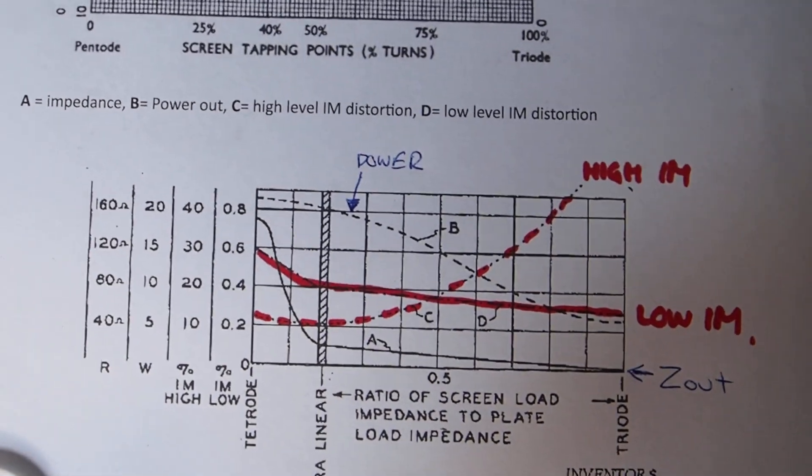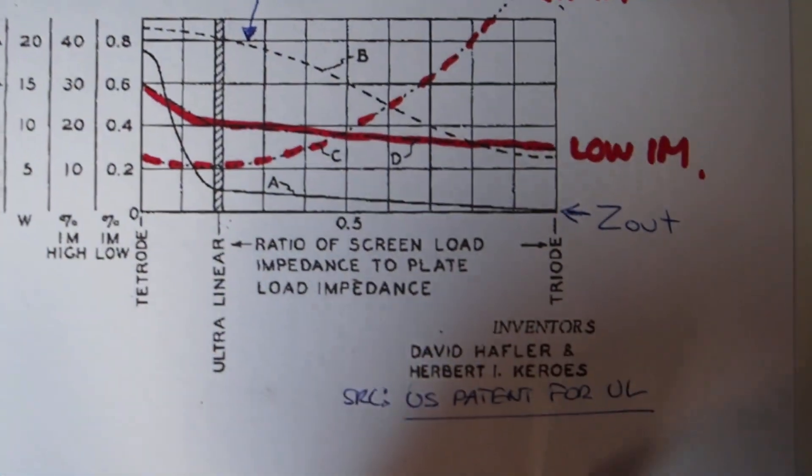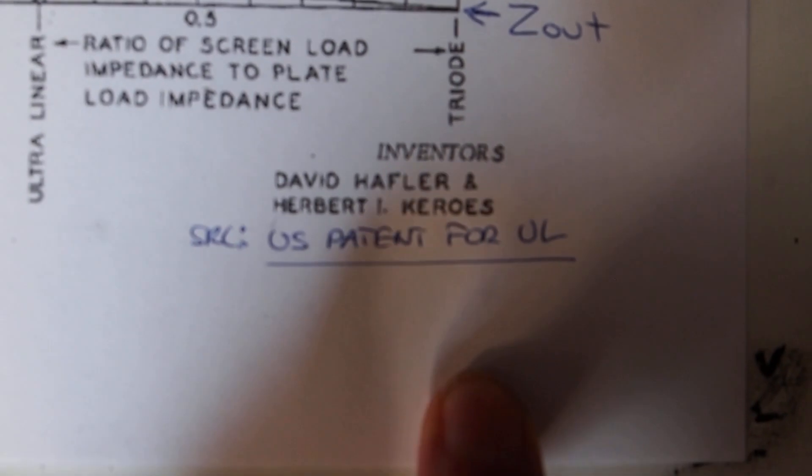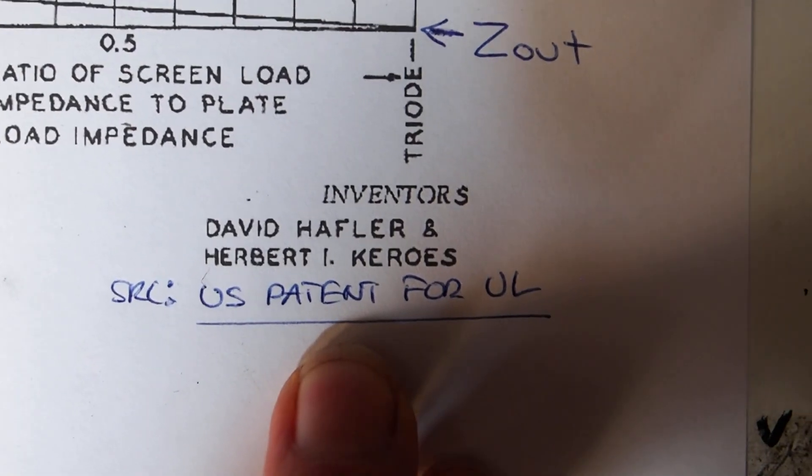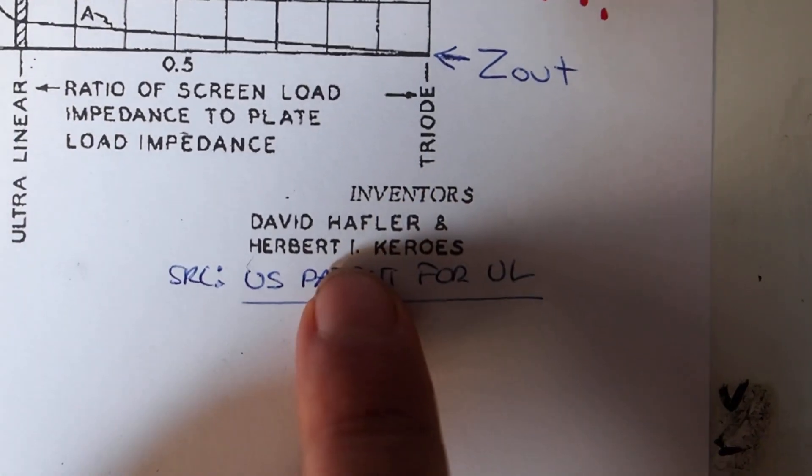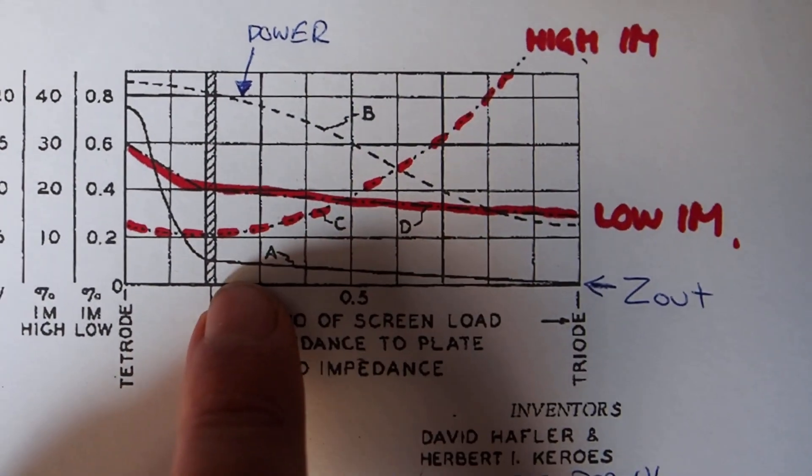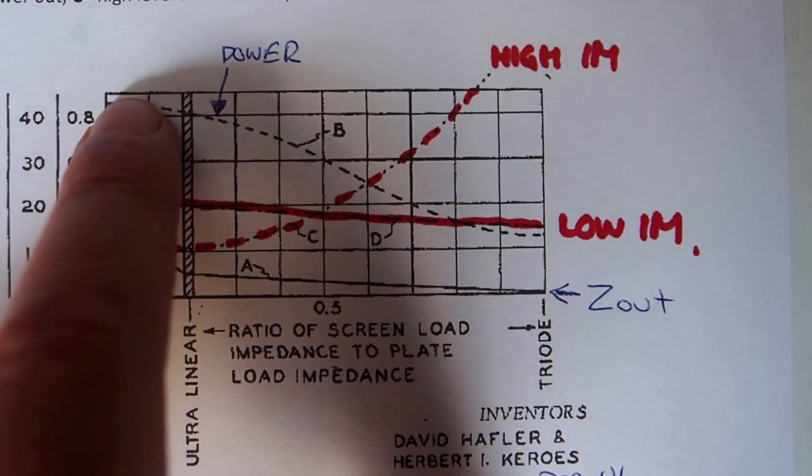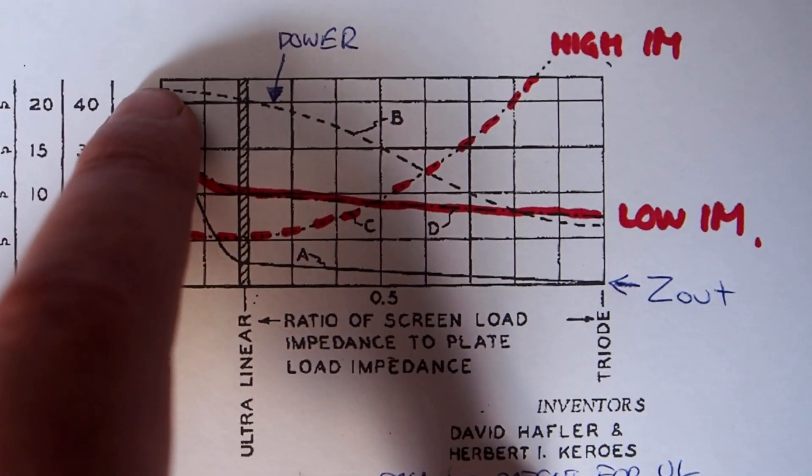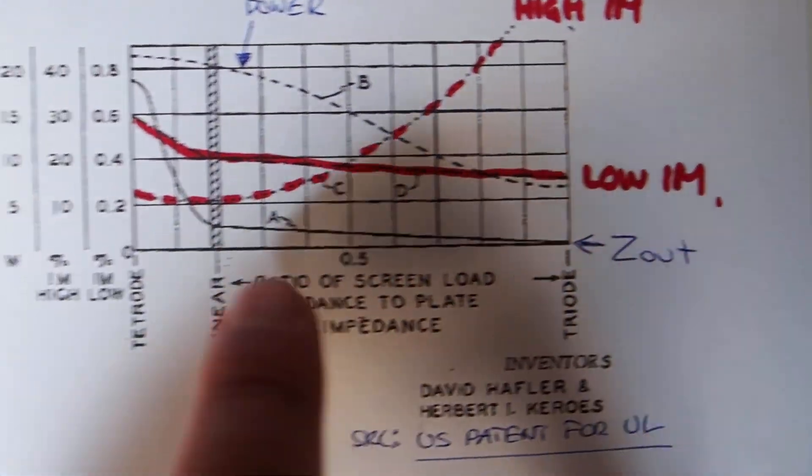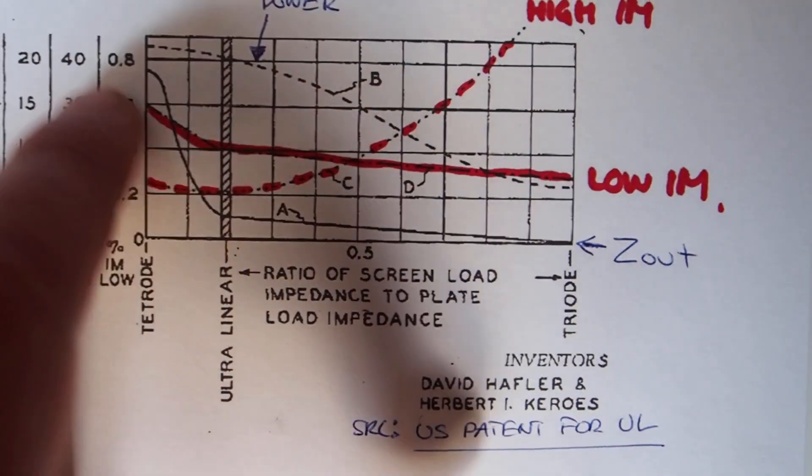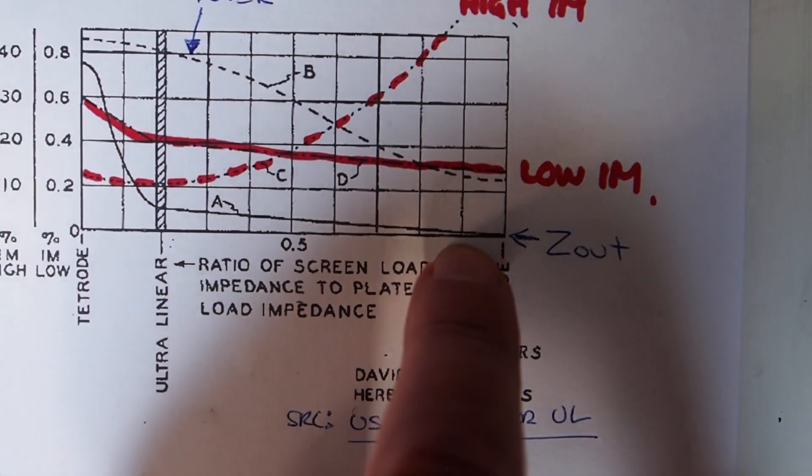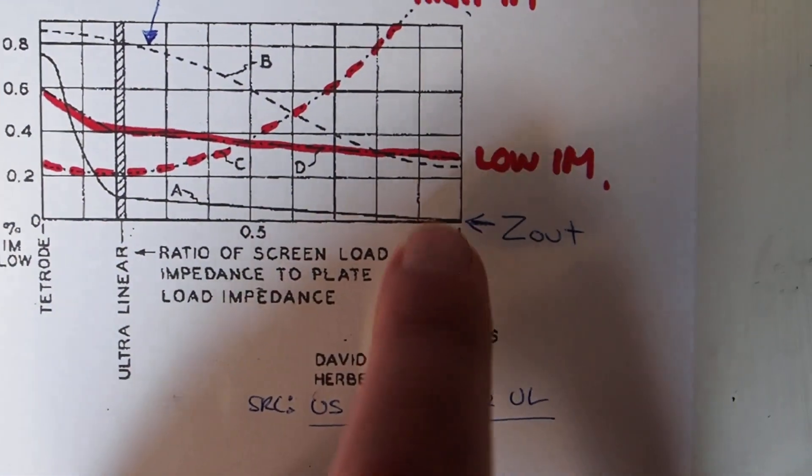But wait, there is more. Here's another one. This is from a graph from the patent, as it was lodged for ultralinear operation. These two guys, David Hafler and Herbert Keroes, they lodged the patent for ultralinear operation and they had this graph. Power, they said, ran like this. As we move from pentode to triode, the power went down. And then we have the output impedance, or the plate here, drops precipitously and then drops quite gently until we hit triode operation.